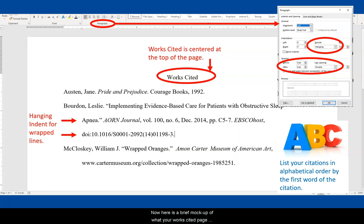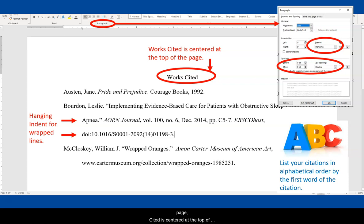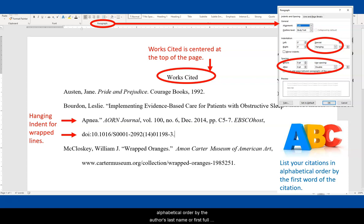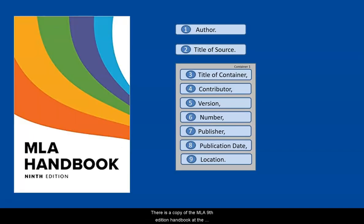Here is a brief mock-up of what your Works Cited page should look like. The title Works Cited — yes, that is works with an S, plural, because you are listing more than one item — is centered at the top of the page, which you have set up with one-inch margins in the same font and size as the rest of your paper. Use the paragraph dialog box to set up your line spacing and hanging indent. List your citations in alphabetical order by the author's last name, or first full word of the title if there is no author. There is a copy of the MLA 9th edition handbook at the reference desk of most major libraries, and multiple copies at the reference desks of the San Jacinto College libraries.